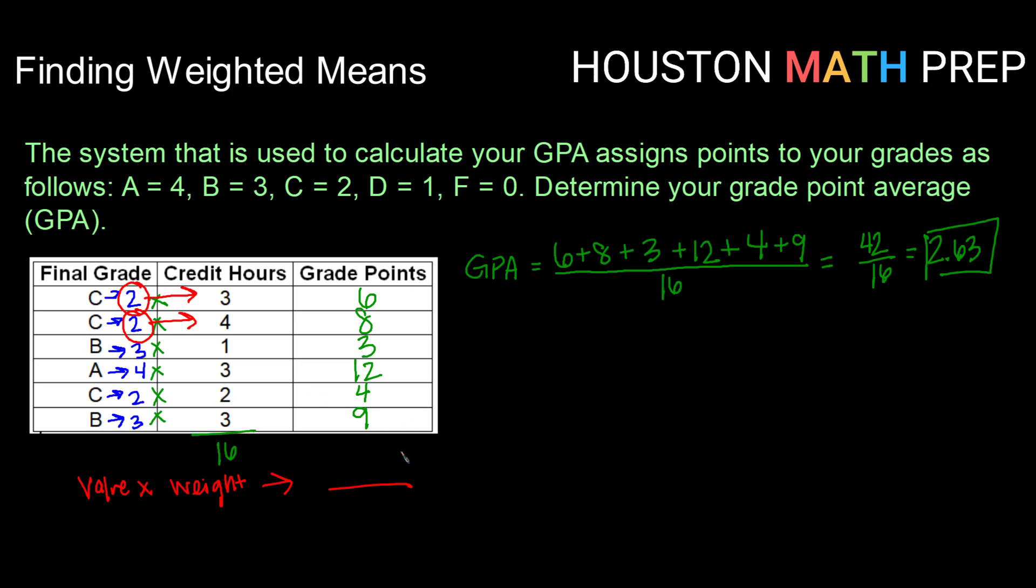We then took the average of those numbers by summing those up and dividing by our total number of weights there. In this case, our total number of credit hours. Alright guys, that does it for this video. We'll catch you in the next one.